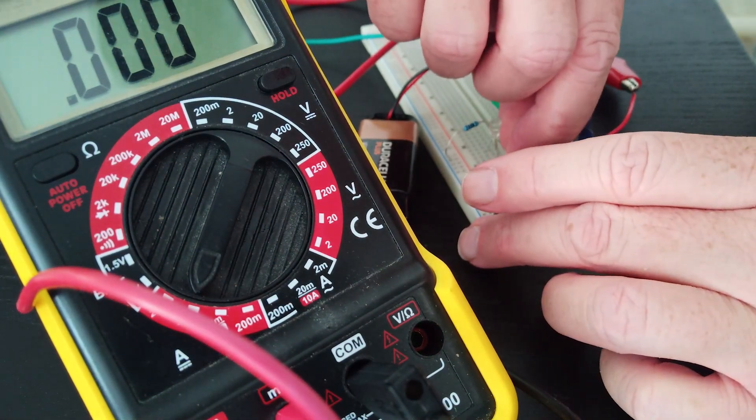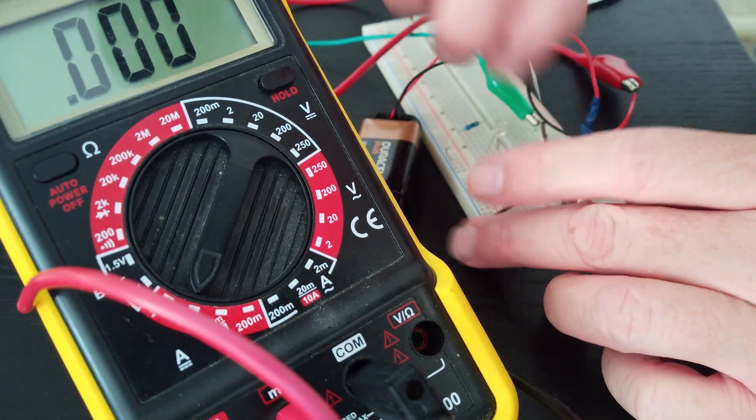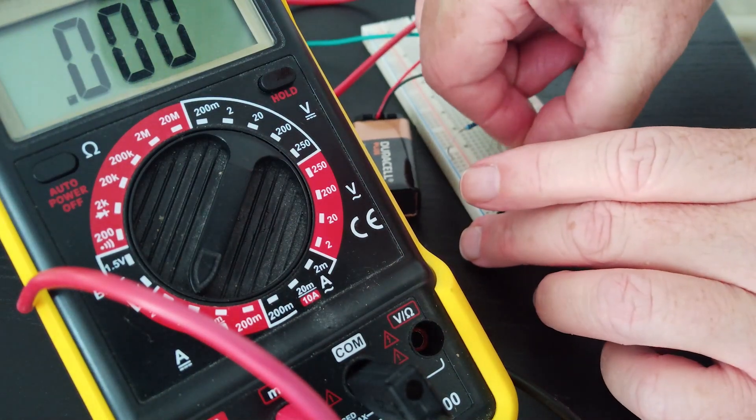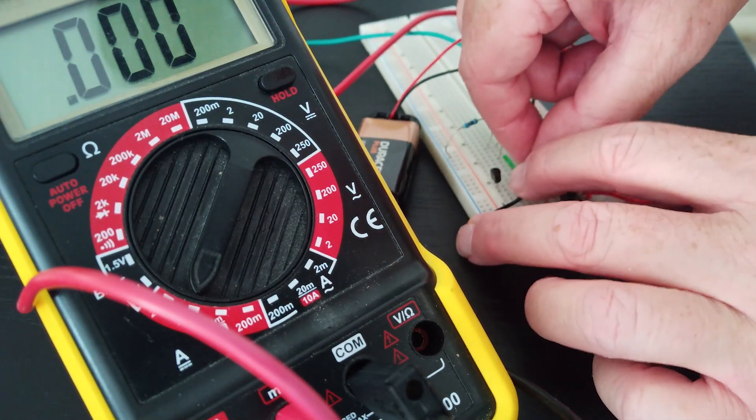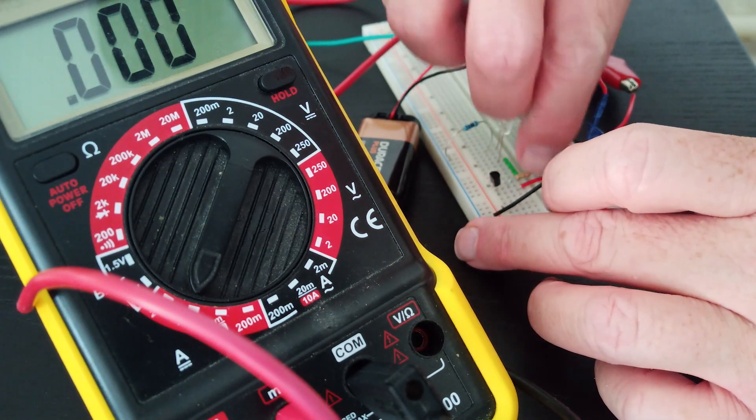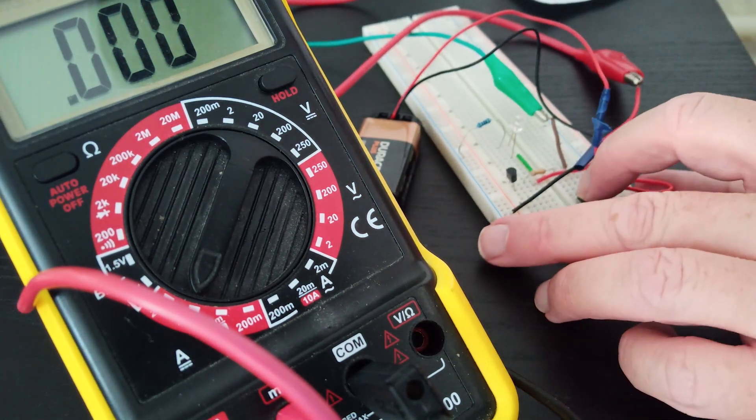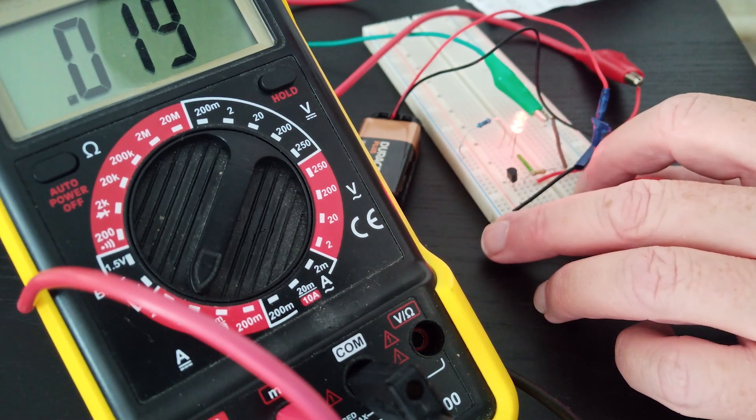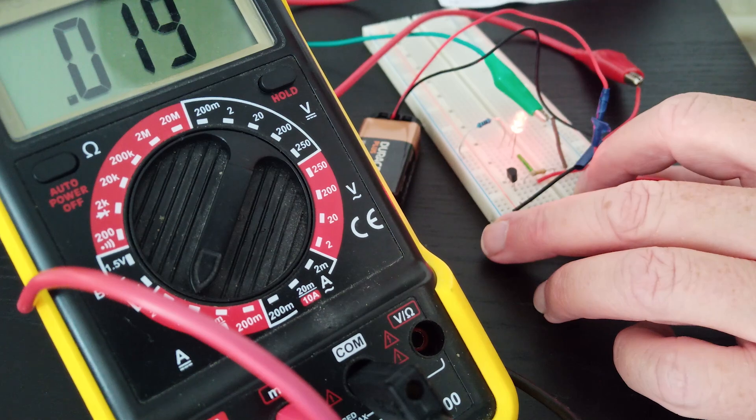And then once again substitute that, this time for a 330k resistor. So just pop that into place. It's a bit fiddly with a crowded breadboard. There we go, and let's see what we get with that. That is giving us a measly 0.019.